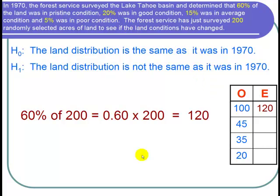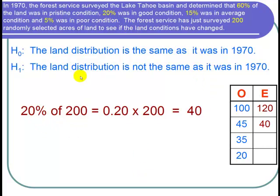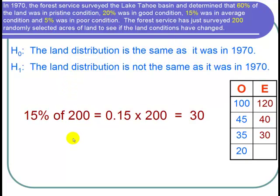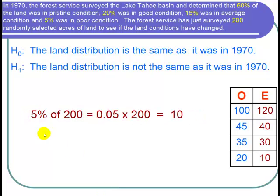Similarly, for the good condition acreage, we take 20% times 200, which equals 40. For the average condition, I take 15% times 200 and get 30. And finally for the poor condition acreage, I take 5% of 200, which is 0.05 times 200, or 10. That completes the expected count column.